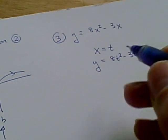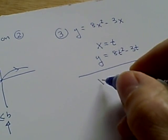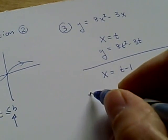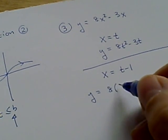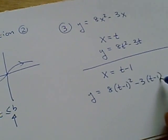But it's not the only way. There are an infinite number of parameterizations. So let's consider one. I could make x equal to t - 1, for example. And then y would be equal to 8(t - 1)² - 3(t - 1). And that could be simplified considerably.